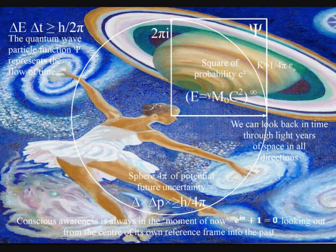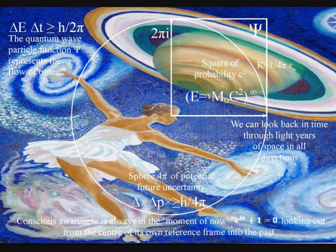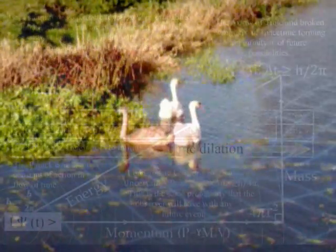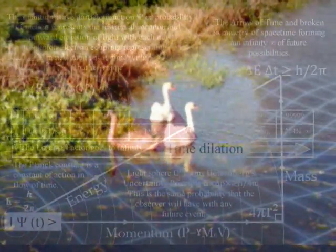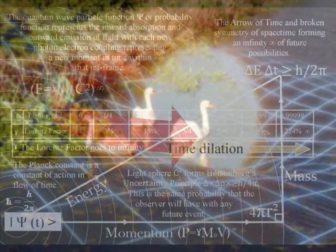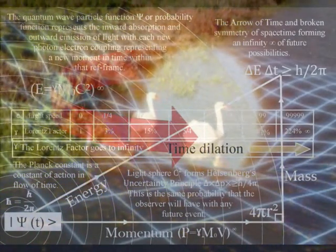By dumbing down consciousness to the level of electrical activity that is aware of its own electrical potential, we can place the individual observer in the centre of his or her own reference frame as an active participant in the dynamics of our universe. Life will create its own ripples in the fabric of space-time as part of one universal process. This is true for the smallest creature as it is for the largest planet.